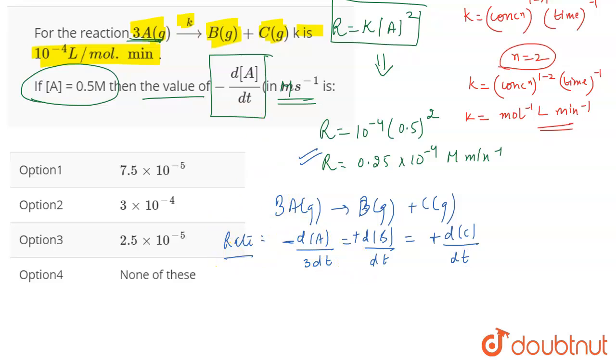So we have the value of rate. So what we will have to do is we will just have to equate this part in the question. The value of rate is 0.25 into 10 to the power minus 4. You have to find out the value of minus dA by dt. It means that we will multiply the rate by 3, and this is going to give us the value of minus dA by dt.